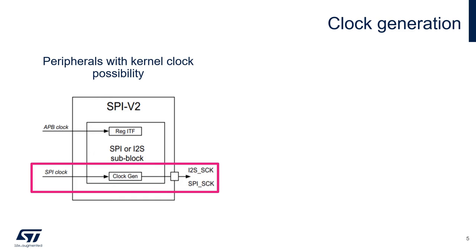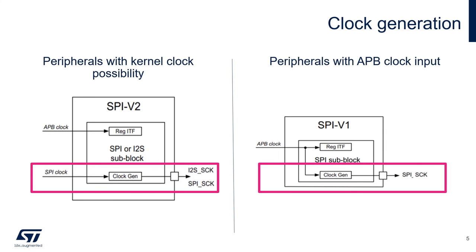We can make a distinction here. Some of the peripherals we are using have kernel clock capability, meaning their clock generator will be fed with a specific frequency different from the APB clock. This usually comes from a PLL or a specific external input, and allows a precise division by the clock generator and ultimately a more accurate frequency. This solution is also the most flexible since it allows having an audio clock that is completely separated from the APB and core clock.